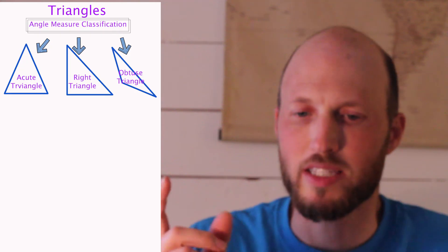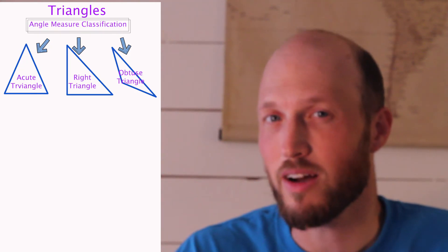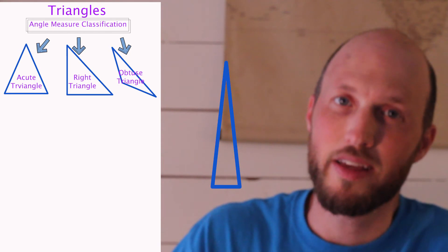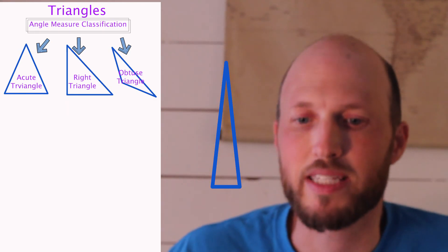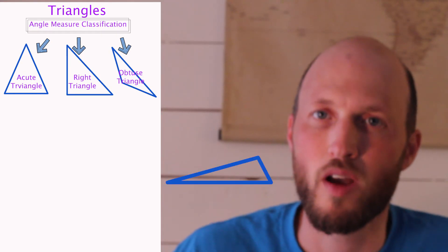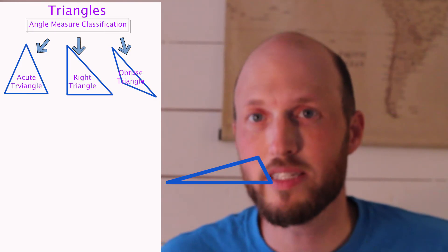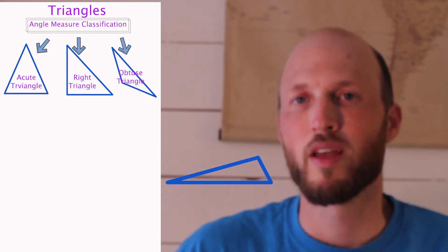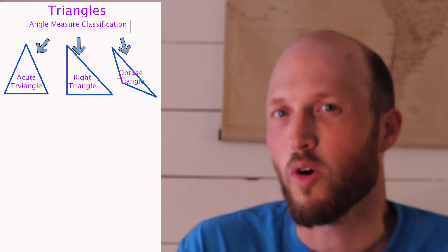Let's give you a couple of triangles and you're gonna see if you can classify these based on their angle measurements. What about this one? All angles are less than 90 degrees, which makes it an acute triangle. What about this one? If you take your piece of paper, it is more than 90 degrees, which makes it an obtuse triangle. So now we've practiced a couple on angle measurements.